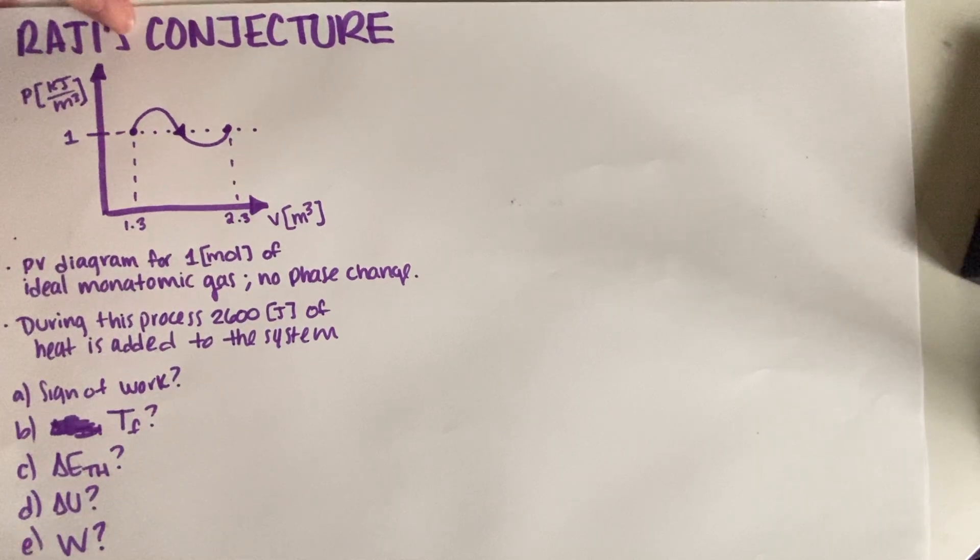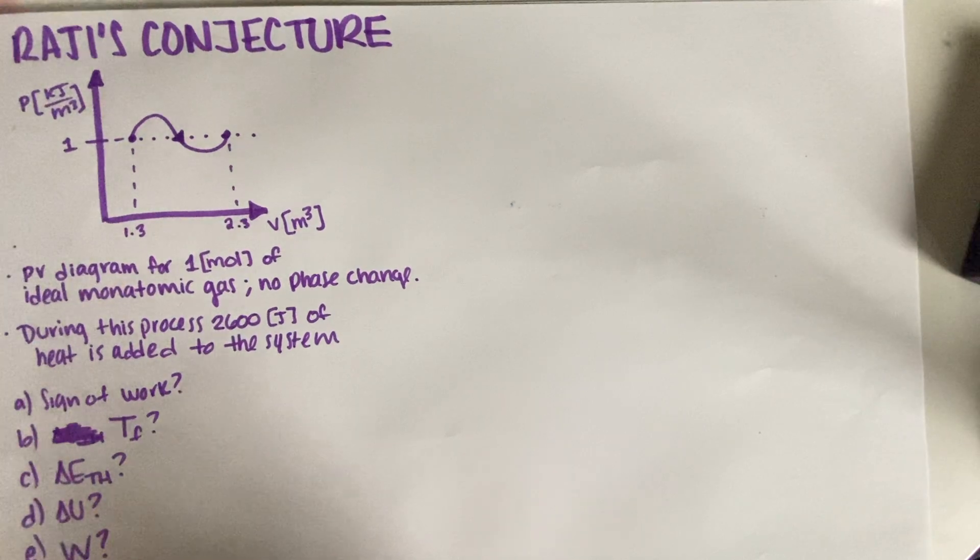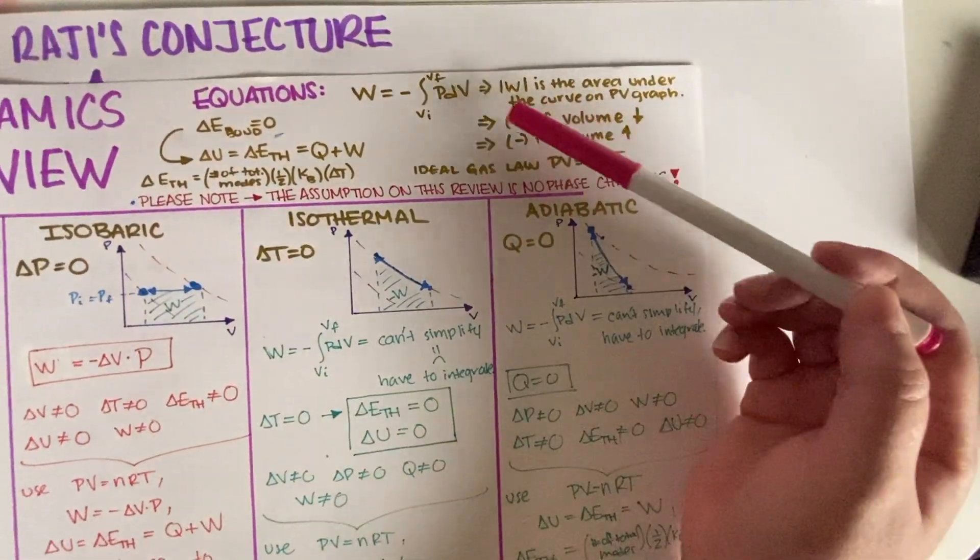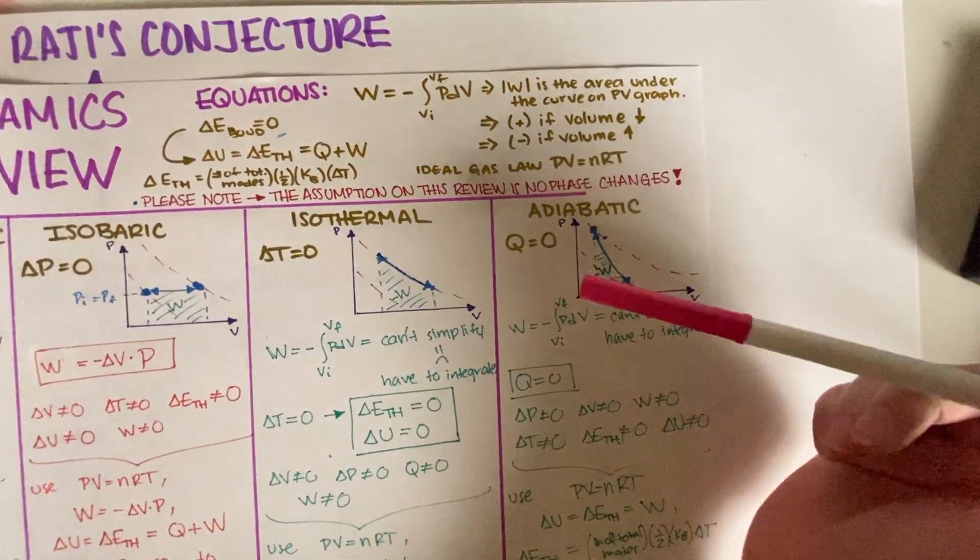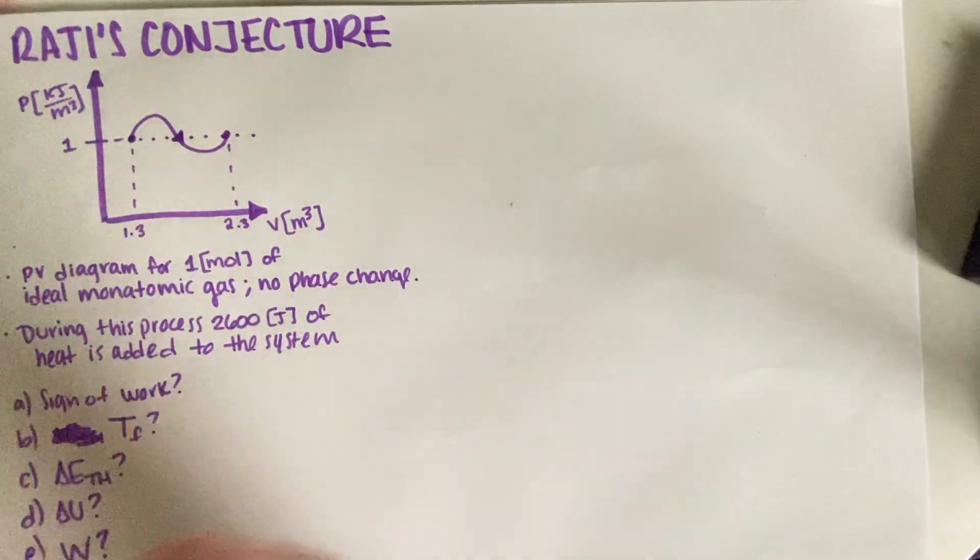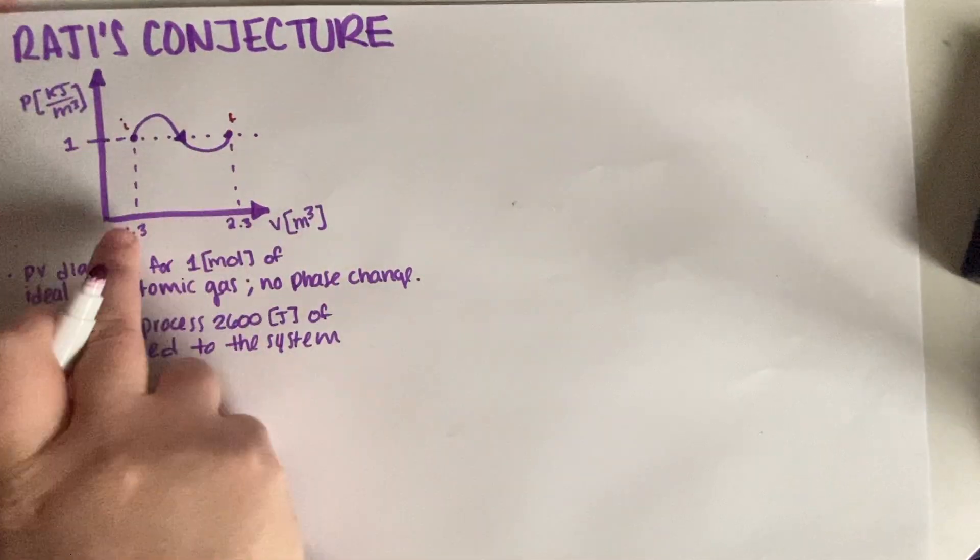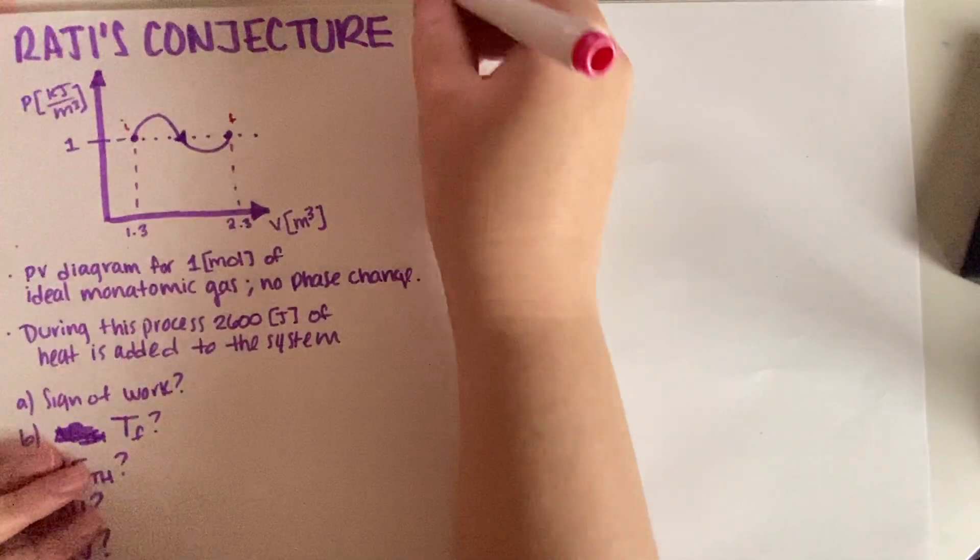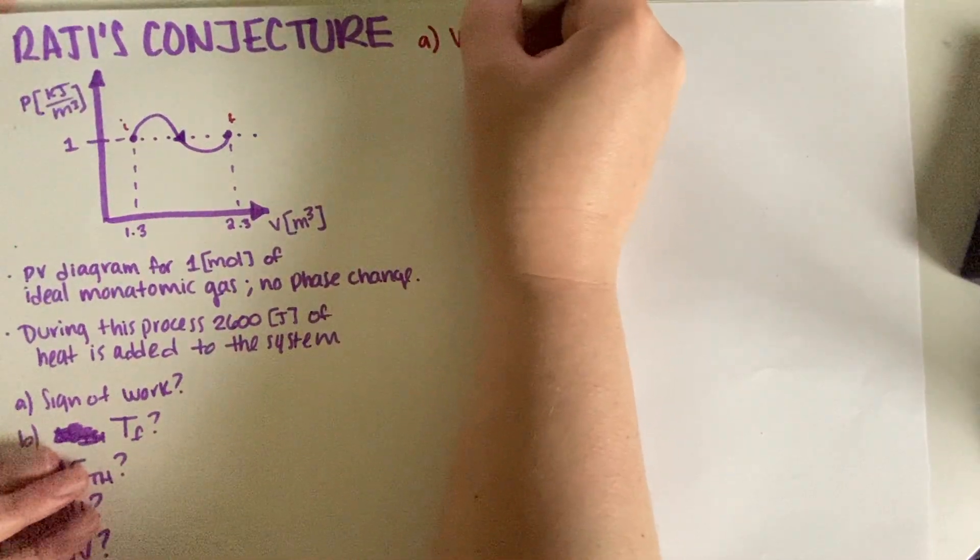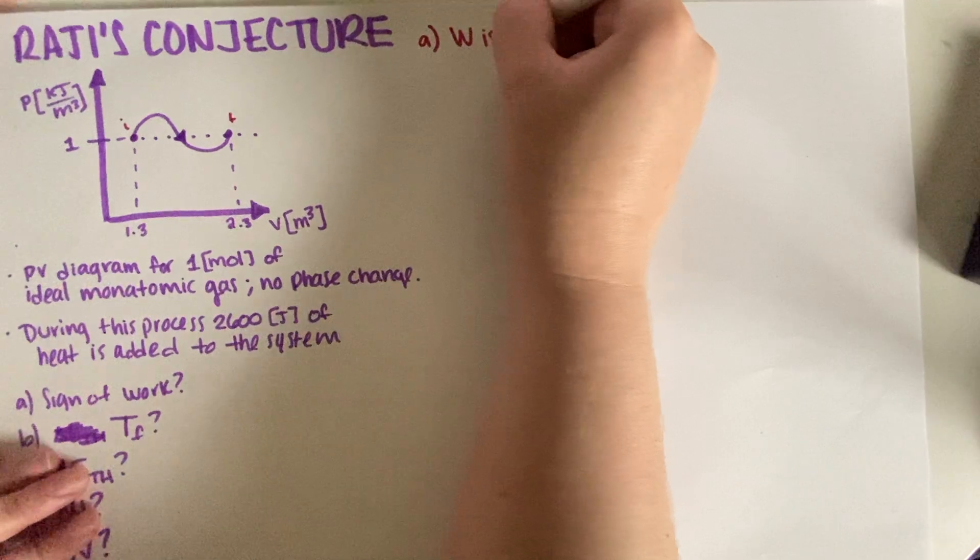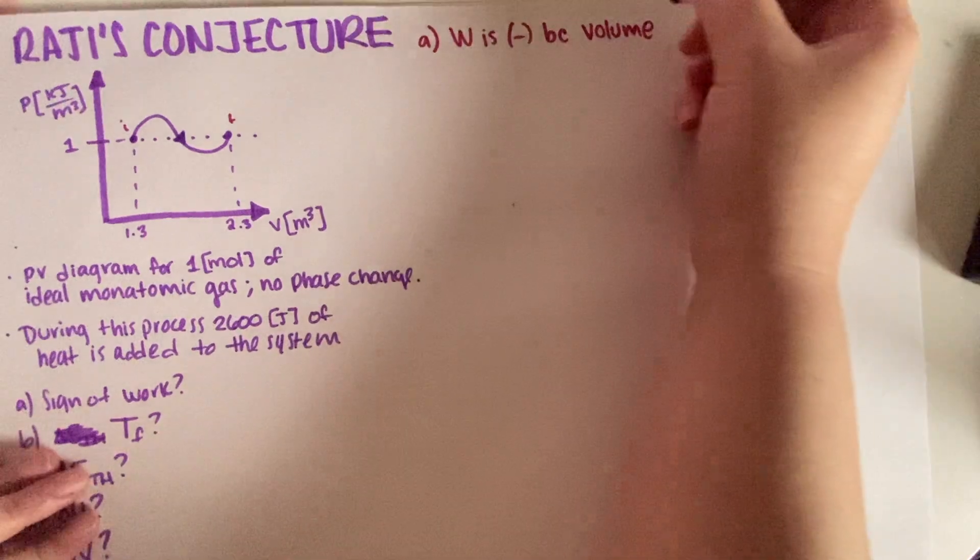First thing that we have to figure out is the sign of the work. So, that's pretty easy, because on the review, we saw that work is positive if the volume is decreasing, and negative if the volume is increasing. So, we just have to look at the graph. So, this is our initial, and this is our final. The volume clearly goes from 1.3 to 2.3. So, the answer to part A is that work is, if it's increasing, then work has to be negative because volume increases.